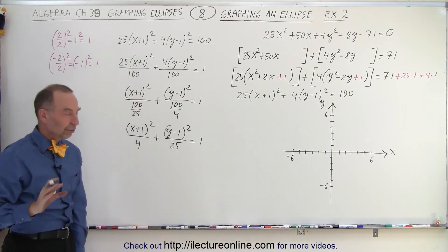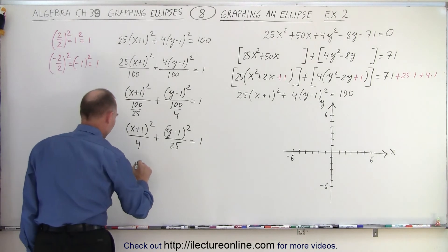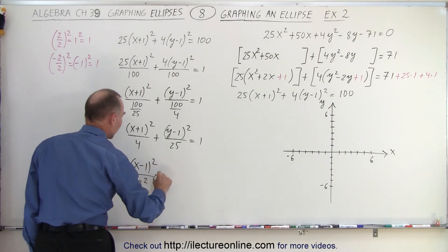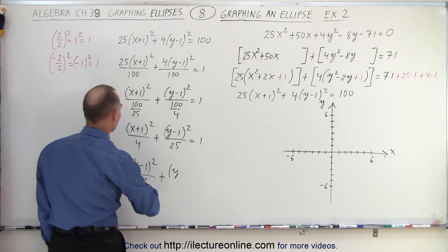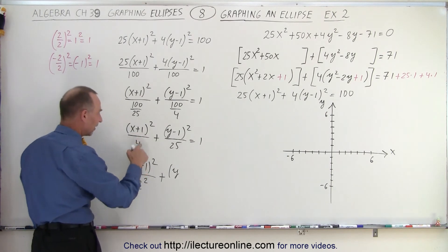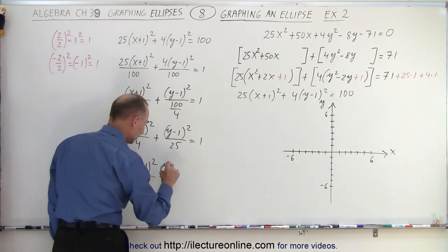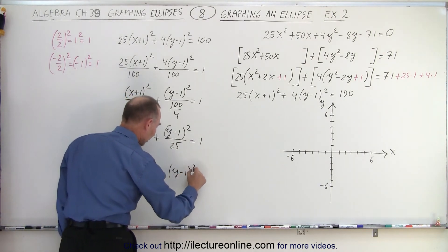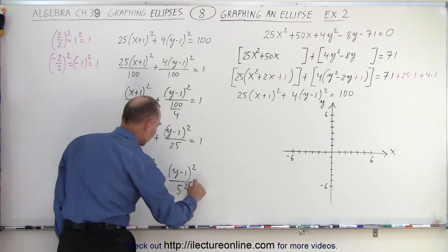And then we write it in the general format. This becomes x minus 1 squared divided by 2² plus y plus 1... I keep doing that, plus, plus. It has to be the same sign. So y minus 1 squared divided by 5² equals 1.